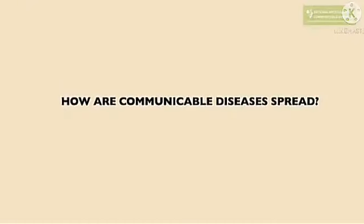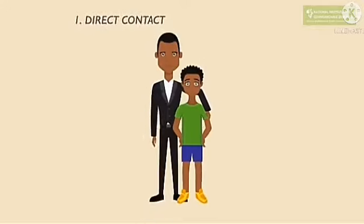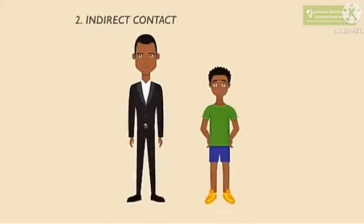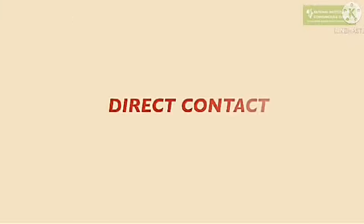How are communicable diseases spread? Communicable diseases can be spread through direct contact or indirect contact. Direct contact is the spread of disease from one person to another person, while indirect contact is the spread of disease from one person to another without direct contact.